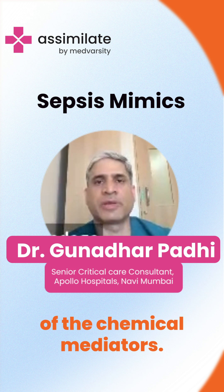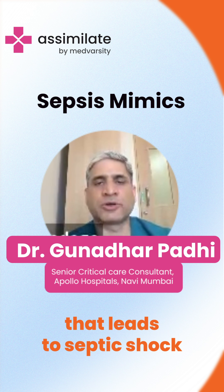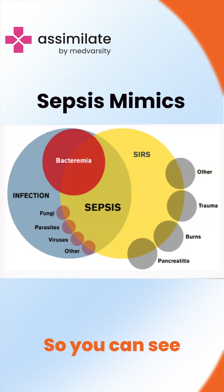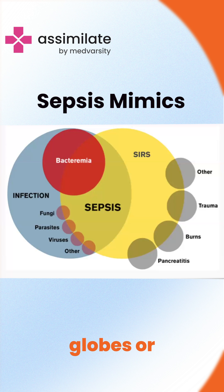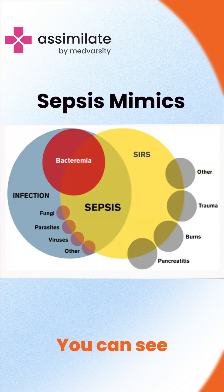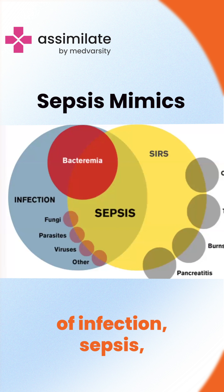Ultimately that leads to septic shock and death. You can see all these four globes, or these four pictures, are overlapping — there is overlapping of infection, sepsis, and the SIRS response.